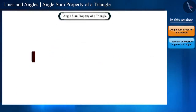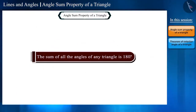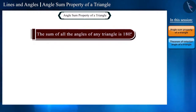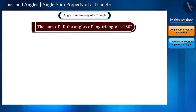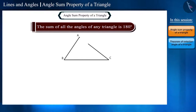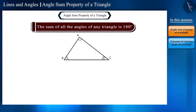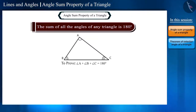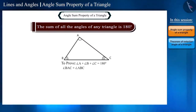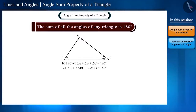Let's start with the first theorem: the sum of all the angles of any triangle is 180 degrees. Friends, you have learned this statement before, but today we will prove it. Suppose a triangle ABC is given whose angles are angle A, angle B, and angle C. We have to prove that angle A plus angle B plus angle C equals 180 degrees.